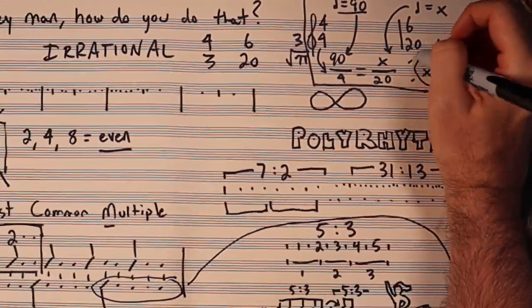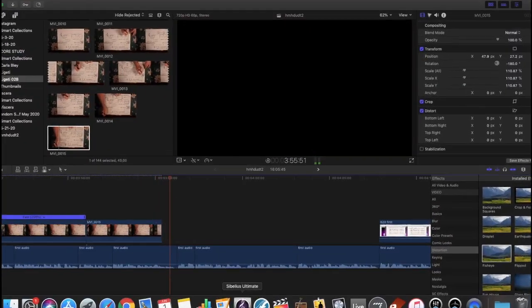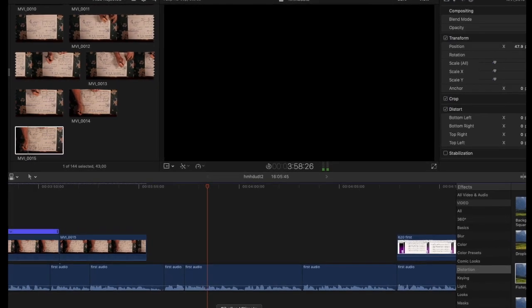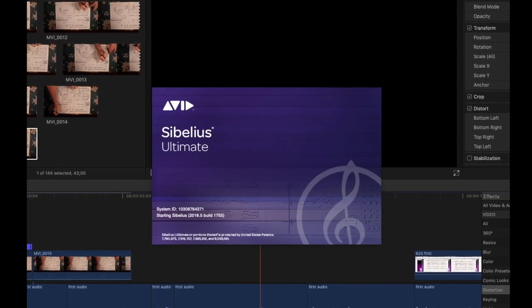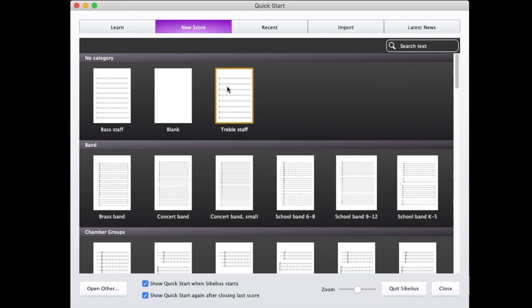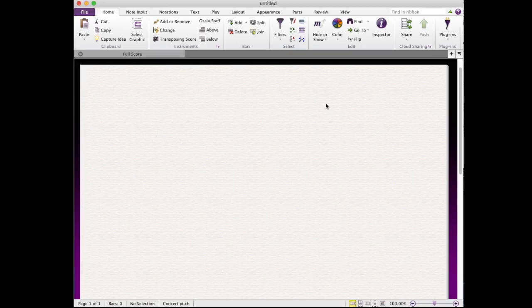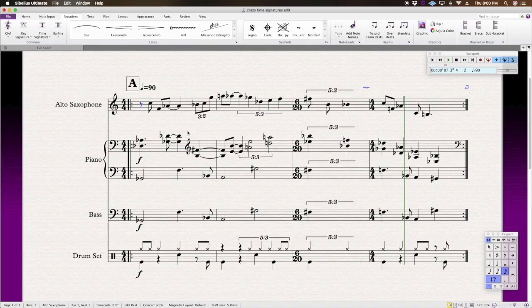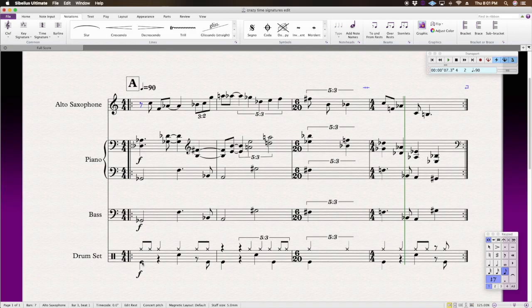Now let's open up Sibelius and begin engraving this beast. To save time, I'm going to show you how to create this time signature and make it play back correctly on Sibelius only. However, you can follow the same process in Finale if you watched my previous video. I wrote a quick groove and melody to illustrate how this 5 over 3, or 6/20 measure, would sound.